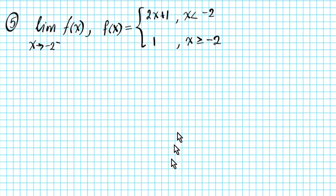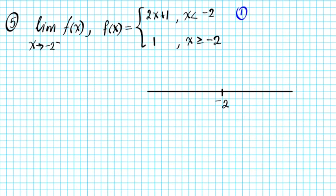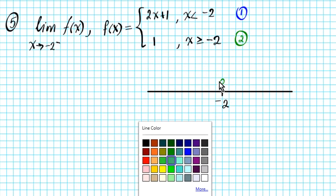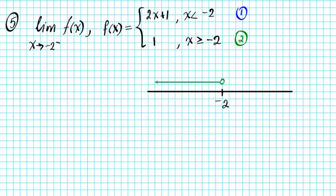We'll give ourselves a visual by drawing a number line to see what's where and which function is active. The split happens at negative two. Let's call the top function one and the bottom function two. For x less than negative two, we look at everything to the left of negative two — that is region one.